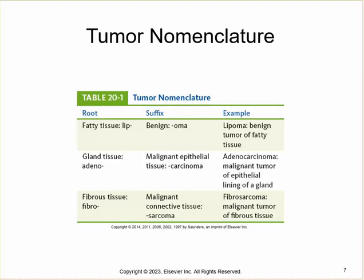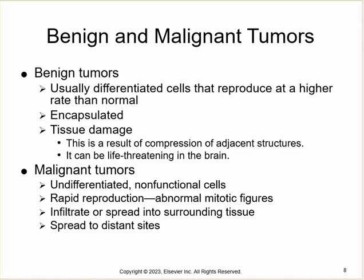The root of a tumor name indicates the tissue type. 'Lip-' means fat, as in liposuction, so a lipoma is a benign tumor of fatty tissue. A malignant one would be a sarcoma — so a fibrosarcoma is a malignant tumor of fibrous connective tissue proper. The nomenclature reflects whether a tumor is benign or malignant.